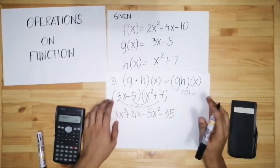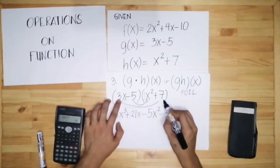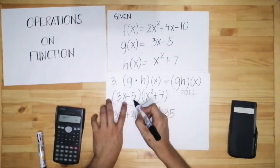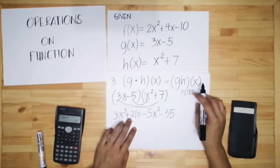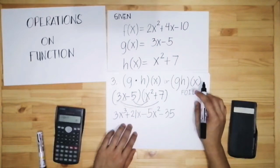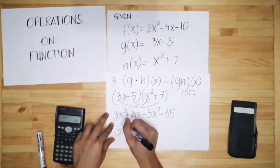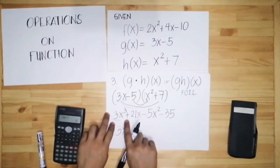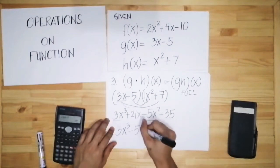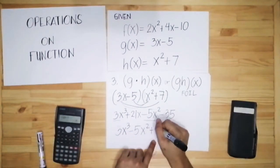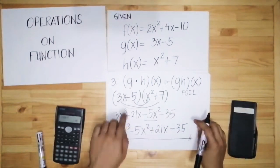Last terms: negative 5 times 7 is negative 35. After doing the FOIL method — First was 3x and x squared, Outer was 3x and 7, Inner was negative 5 and x squared, Last was negative 5 and 7 — we now arrange the terms and check for similar terms to combine. 3x cubed has no similar term, so copy it. Negative 5x squared has no similar term, copy it. Plus 21x, copy. Then minus 35. The final answer is 3x cubed minus 5x squared plus 21x minus 35.